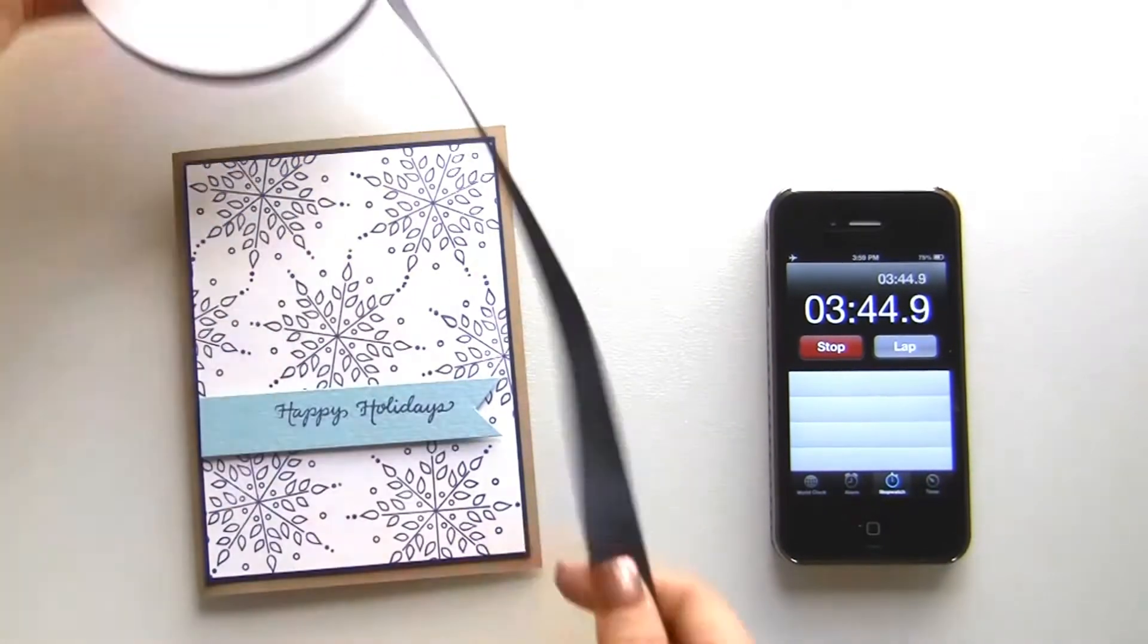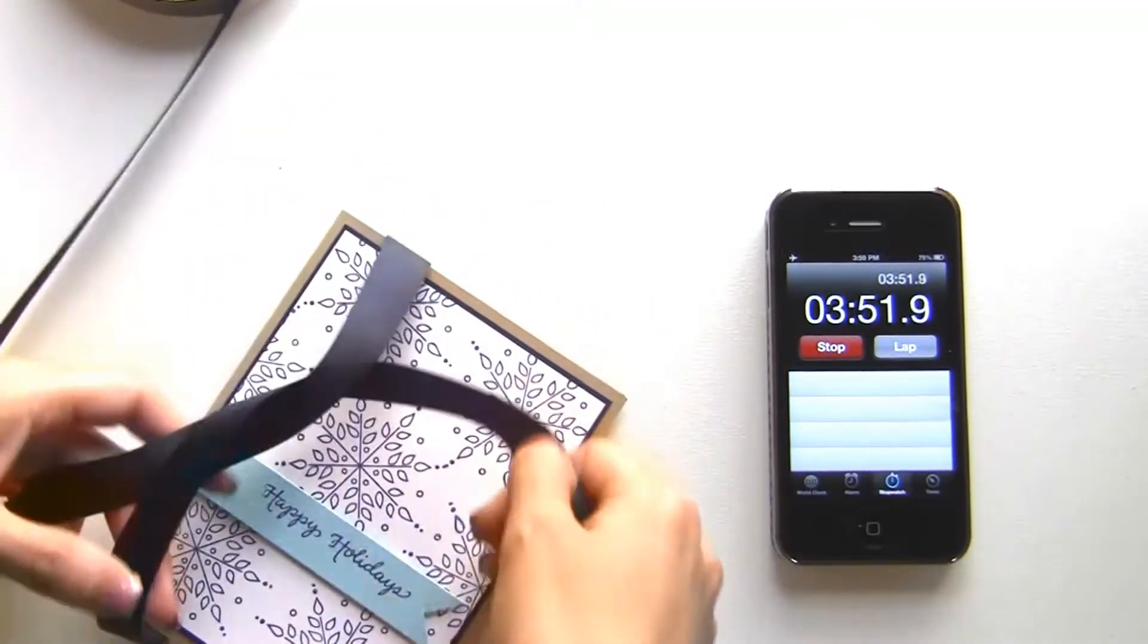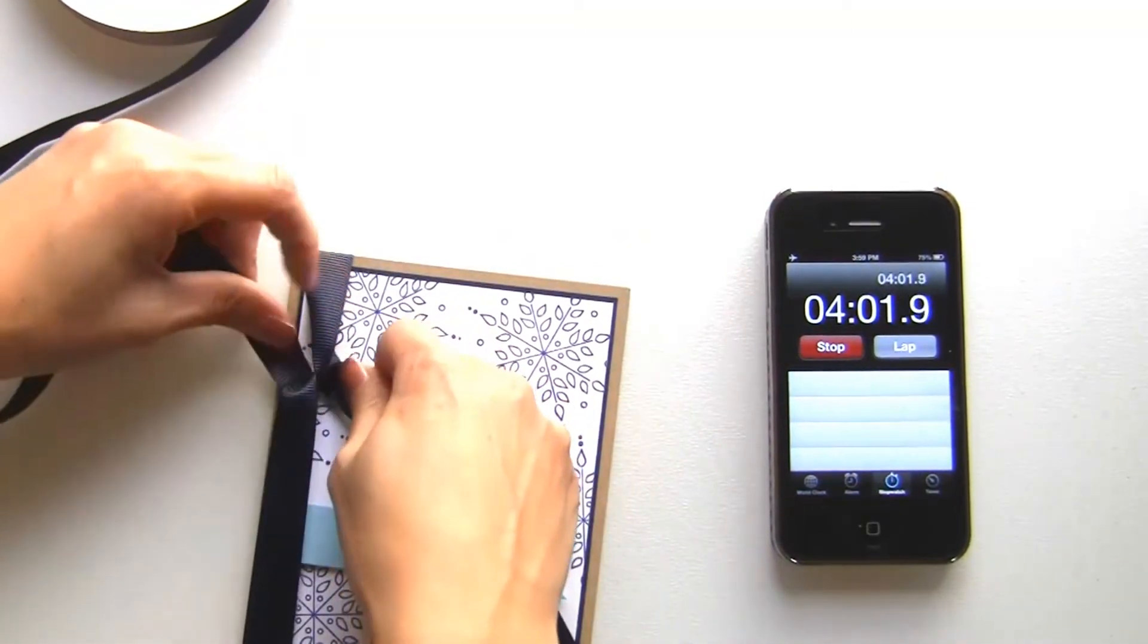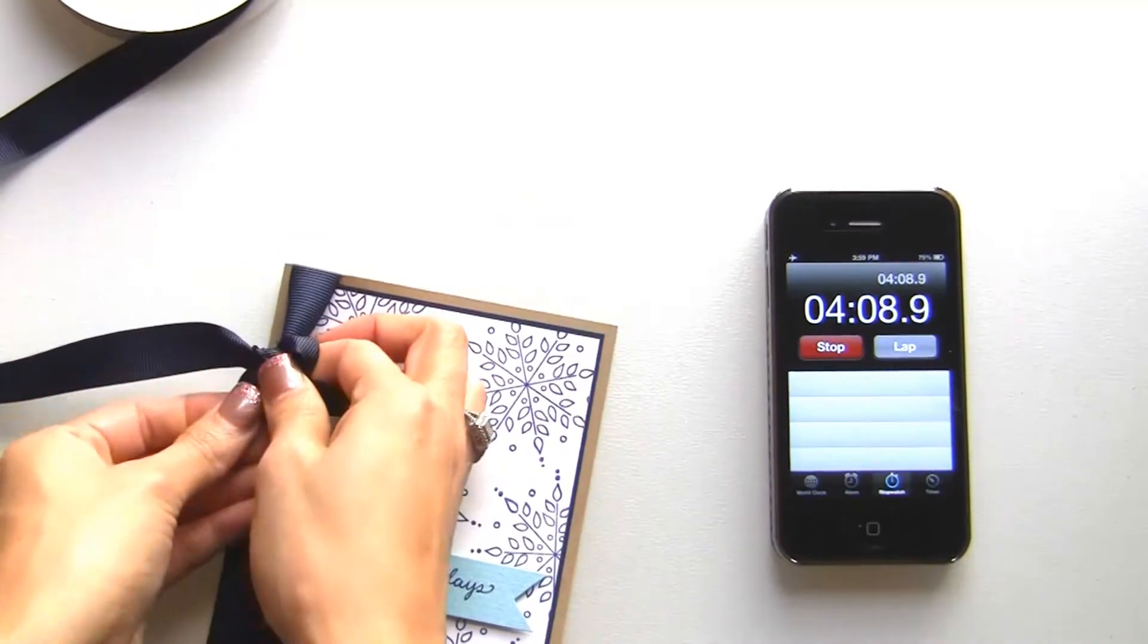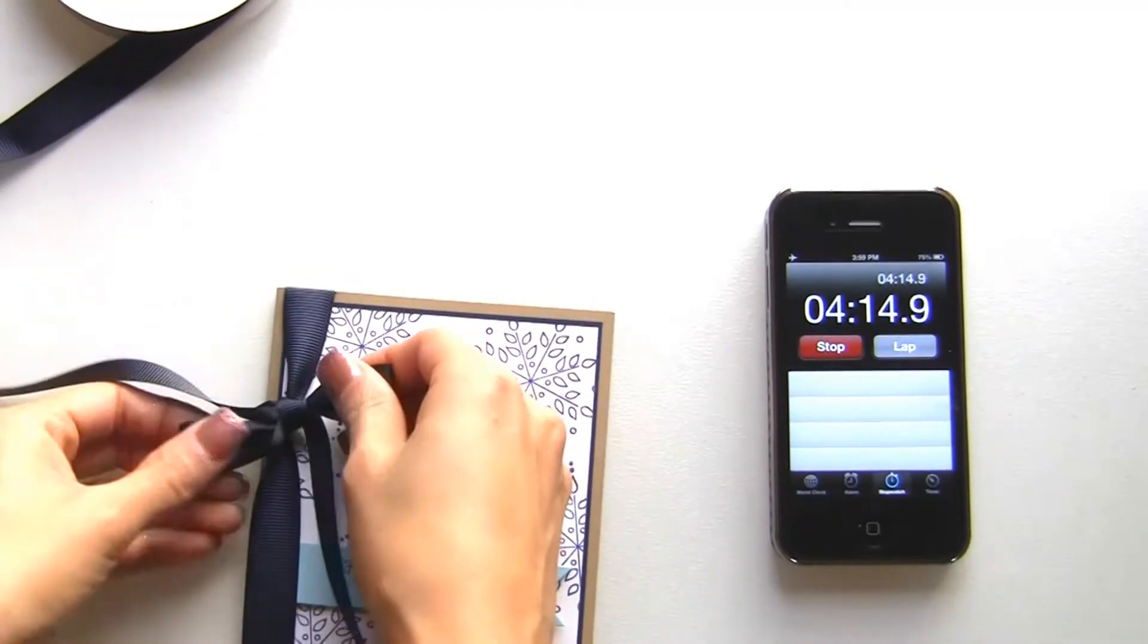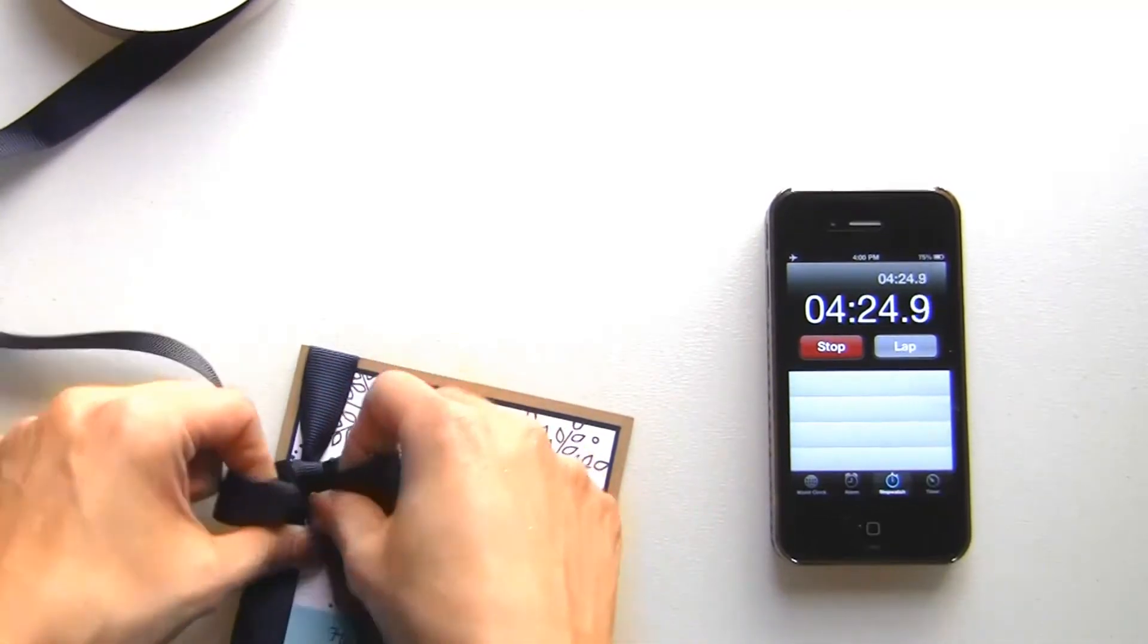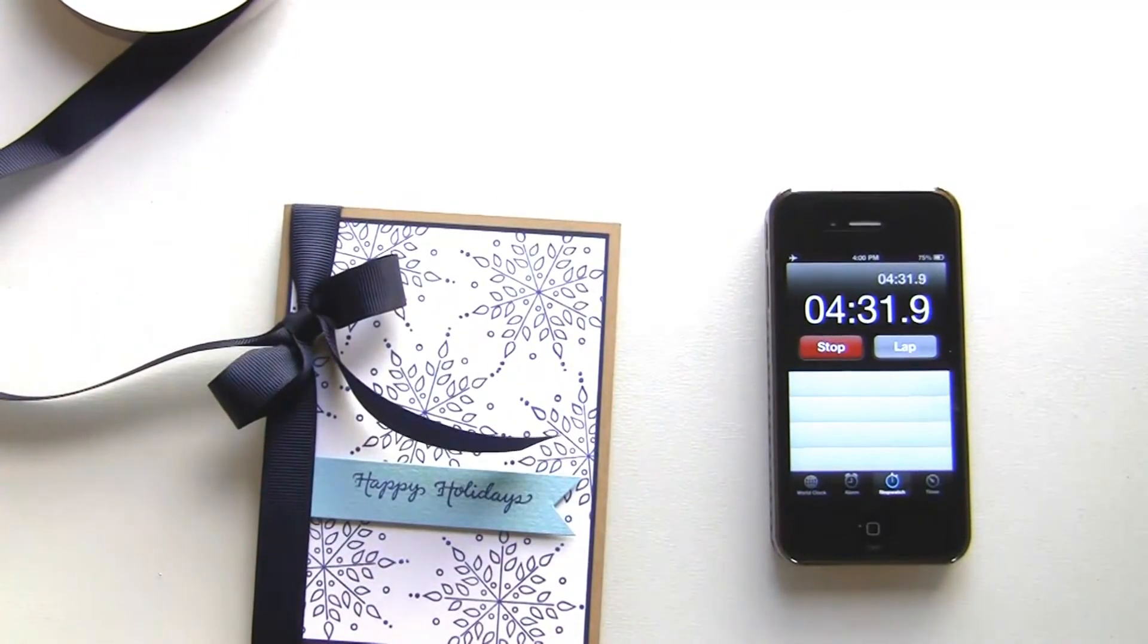So I'm using a piece of navy grosgrain. I'm just going to create a bow. I'm just going to forewarn you bows are always harder when you're doing it on camera so bear with me. Okay and then you can just play with it and get it perfect. You'll just want to make sure the middle is nice and tight. Okay so there's that and then I'm going to cut off the ends.